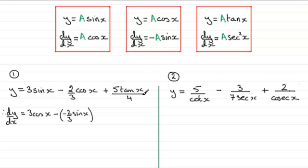For the last term, 5 tan x over 4, I see this as plus 5/4 times tan x, so my constant A is 5/4. When differentiating that, the result is plus 5/4 multiplied by sec squared x. Tidying this up, dy/dx equals 3 cos x.